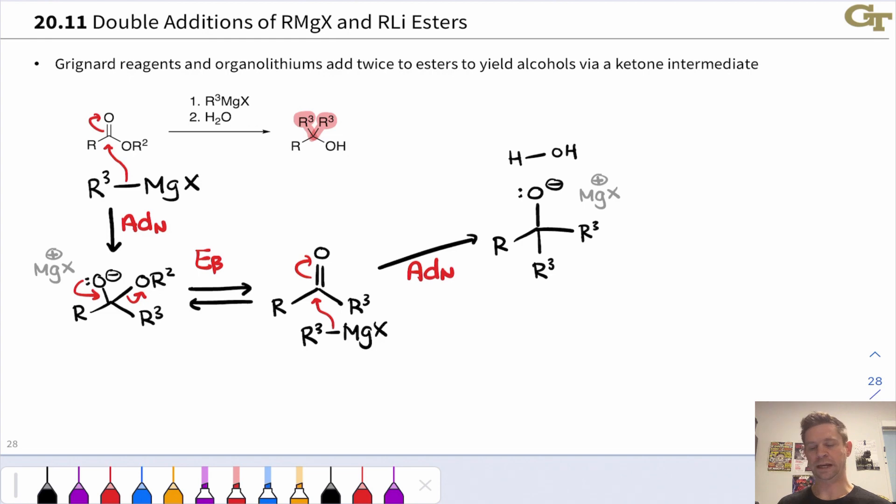Upon workup, we add water. Water transfers a proton to the alkoxide, and we end up with this neutral tertiary alcohol product in which we get two copies of the Grignard's organic group added to the organic substrate via a substitution process first and then an addition process. This occurs with both Grignard reagents and with organolithiums, and this mechanism also applies to the acyl chloride and anhydride reactions analogous to this that we've seen previously.